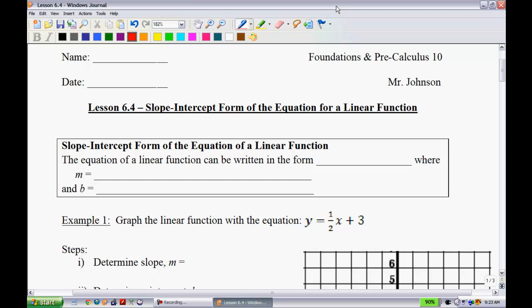The equation of a linear function can be written in the form y equals mx plus b. M, just like I said, is the slope of the line. And b, this is going to be a little bit new to you, b is going to be its y-intercept.